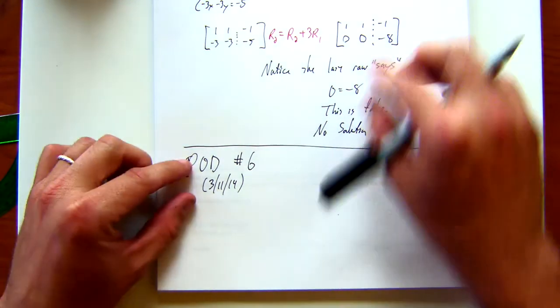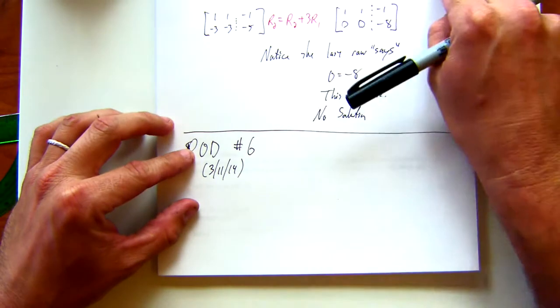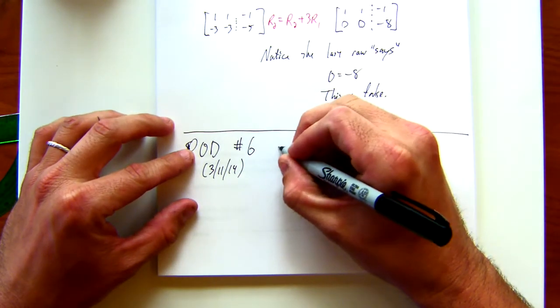So, I want you to, for the problem is use Gauss-Jordan elimination. I'm going to try to save some paper space. But use Gauss-Jordan elimination to solve the system.